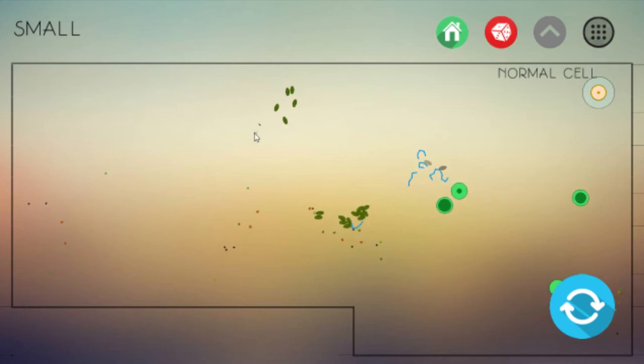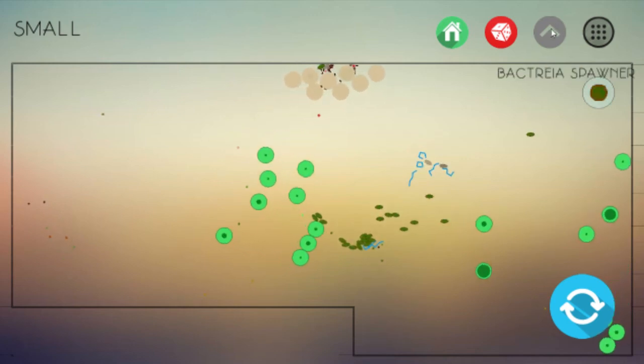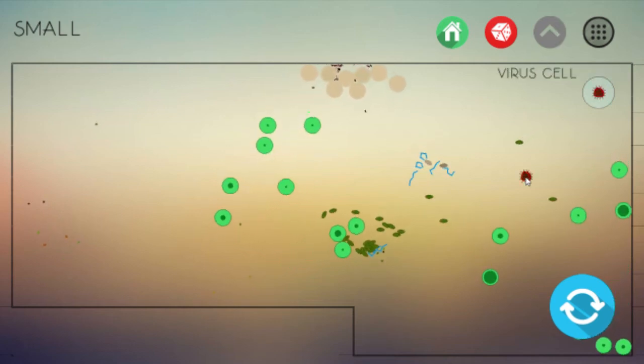Now those are all the cells but now we can turn on the randomizer. Place a few cells here, place a few cells here, here, maybe some bacteria and maybe some viruses.